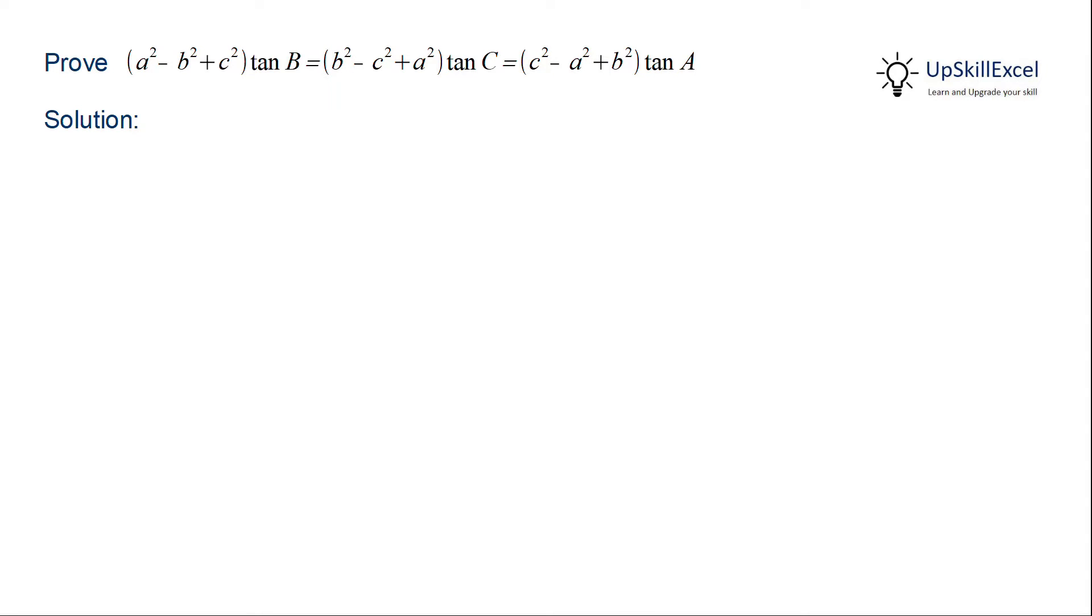Prove that a² - b² + c² tan B equals b² - c² + a² tan C equals c² - a² + b² tan A. Here we have to show that the three terms are equal.